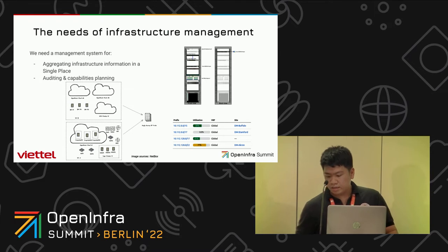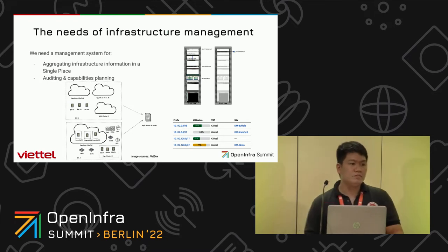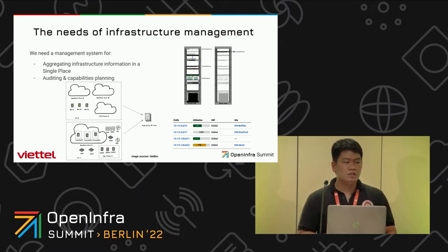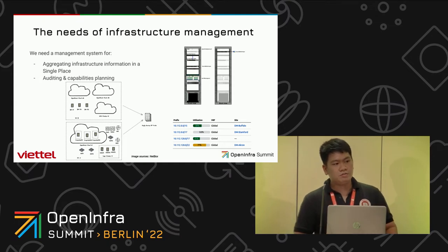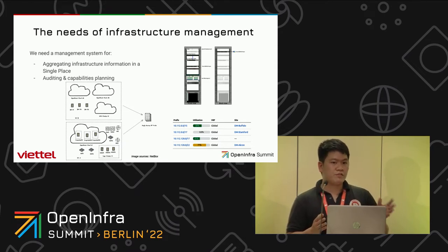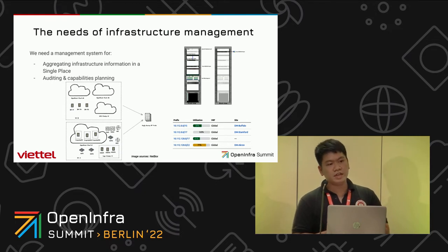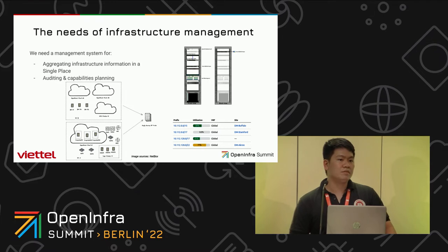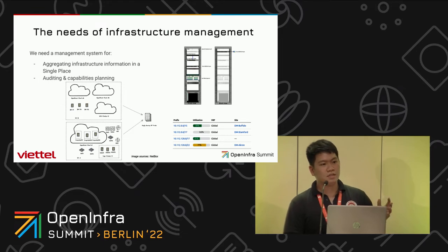The other demand is to check the difference between our design state and the current real state. For example, some VMs may have duplicate IPs in the environment due to human error or misconfiguration. We need the infrastructure management system to detect it and alert the object manager to fix it, to ensure no VM in the infrastructure has a duplicate IP and that the system works correctly.